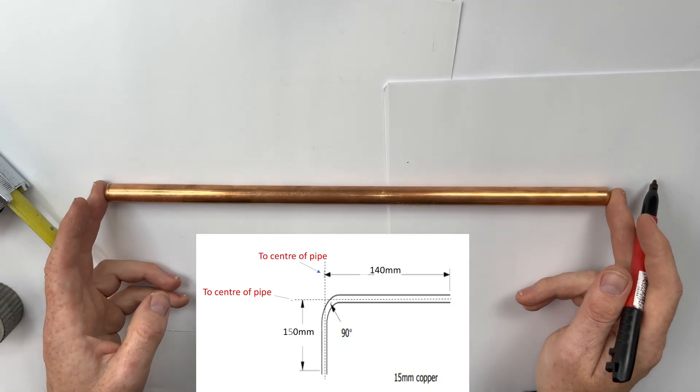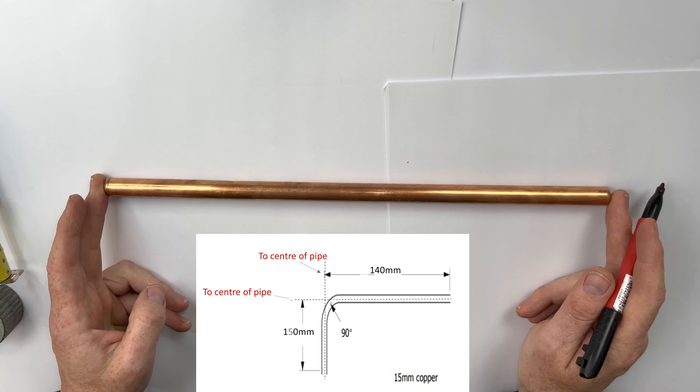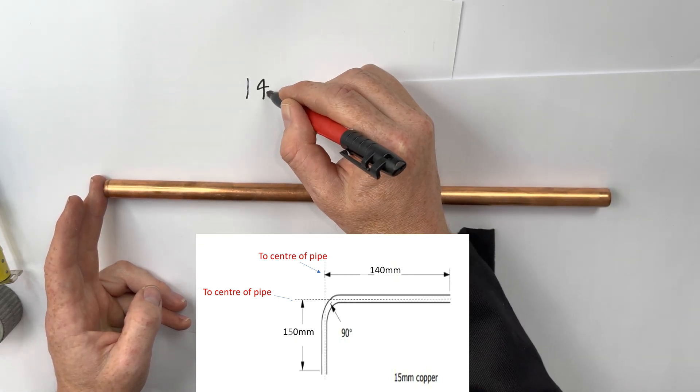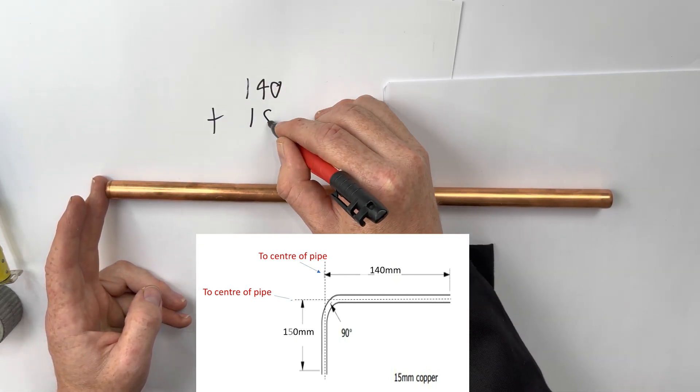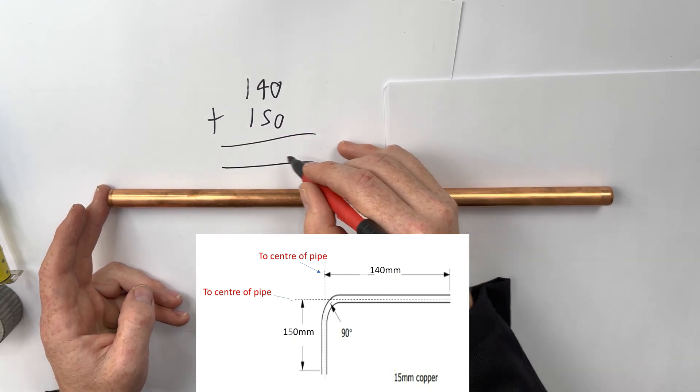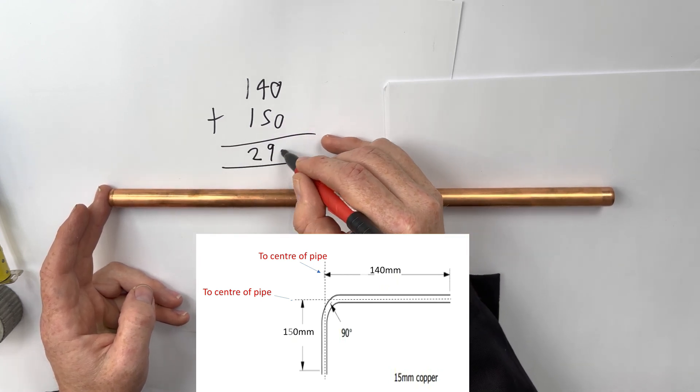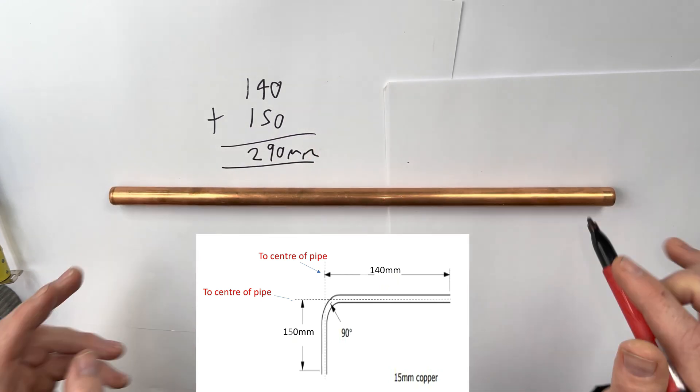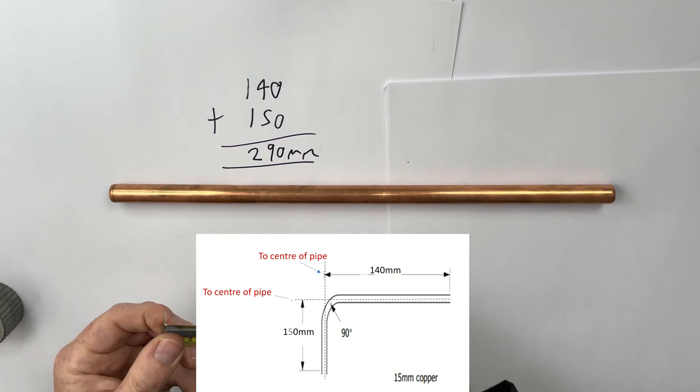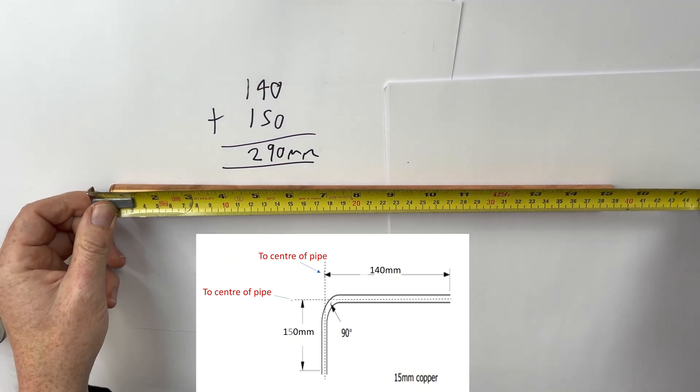Let's do the first task. So 140 plus 150 is 290 mm. Let's measure our pipe 290 mm.